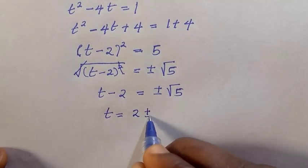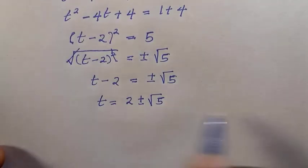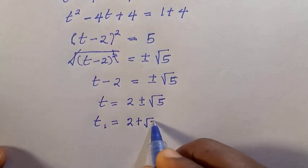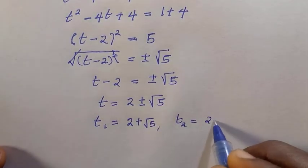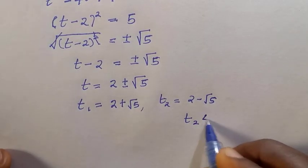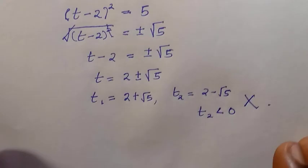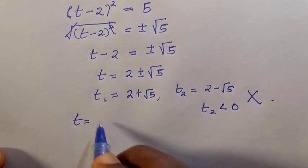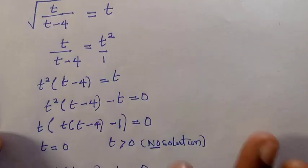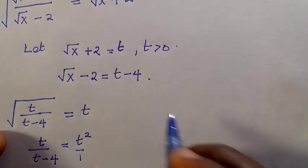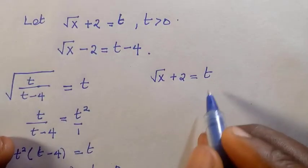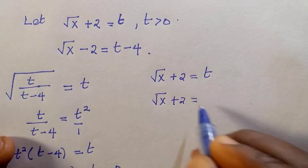Therefore t equals two plus or minus root five. This gives two values: t₁ equals two plus root five, and t₂ equals two minus root five. Since t must be greater than zero, we note that two minus root five is less than zero, so we reject it and take t equals two plus root five. We now go back to our substitution: root x plus two equals two plus root five.